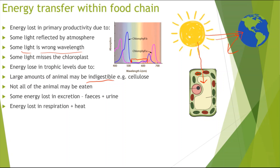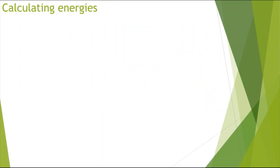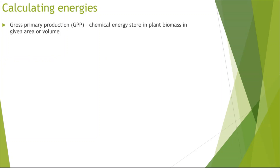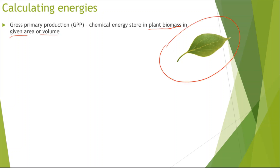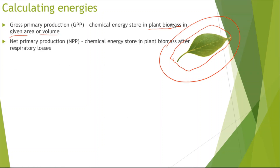Now for calculating energies — you need a few definitions. Gross Primary Production, also called GPP, is the chemical energy stored in plant biomass in a given area or volume. For example, in a plant leaf of 25 cm³ we might have 10 kilojoules of energy — that would be the gross primary production.